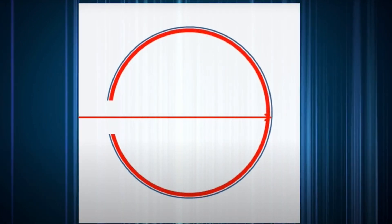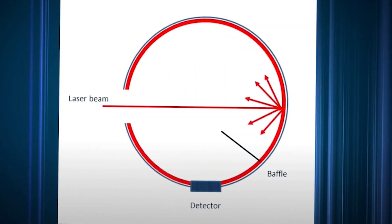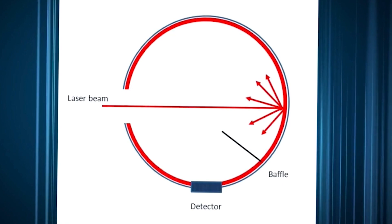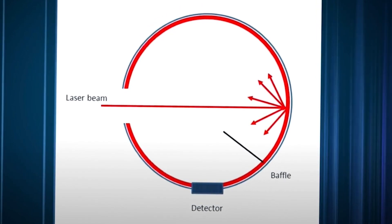A detector measures the power and, because the light has been uniformly distributed, the fraction of the total power that the detector sees is an accurate indicator of the total power in the beam.